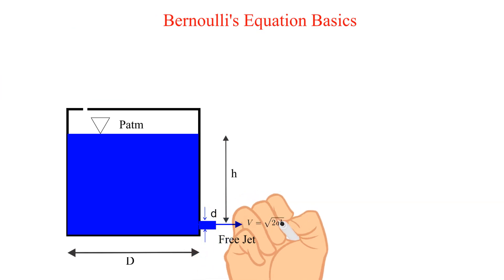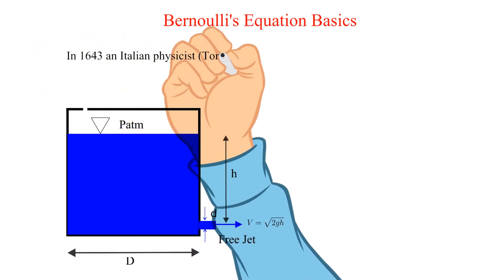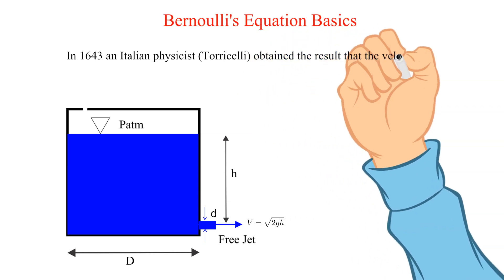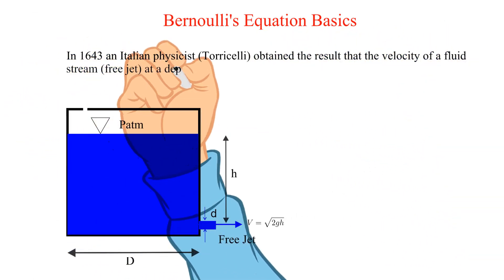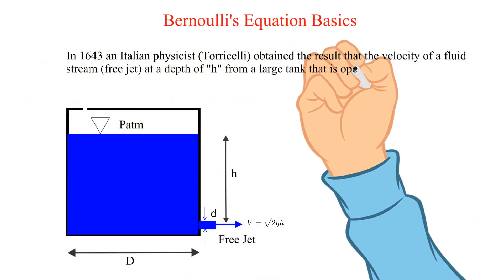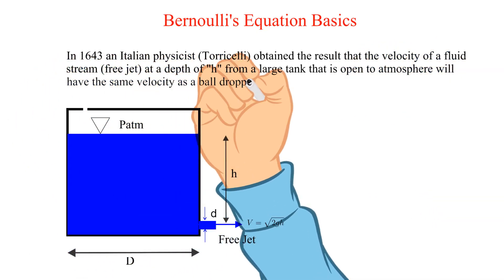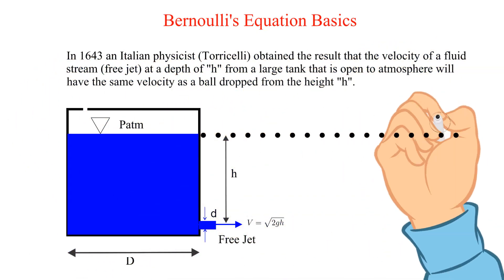This result should look familiar. In year 1643 an Italian physicist, Torricelli, obtained the result that the velocity of a free jet fluid stream at a depth of H from a large tank that is open to atmosphere will have the same velocity as a ball dropped from the height H if air resistance is negligible.